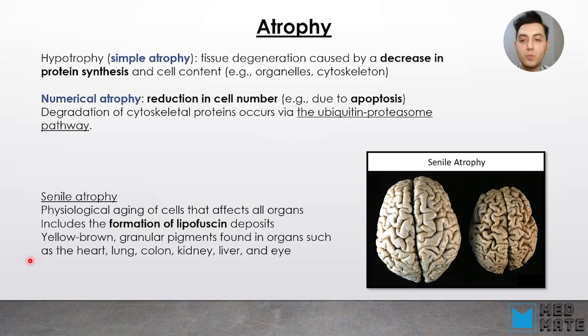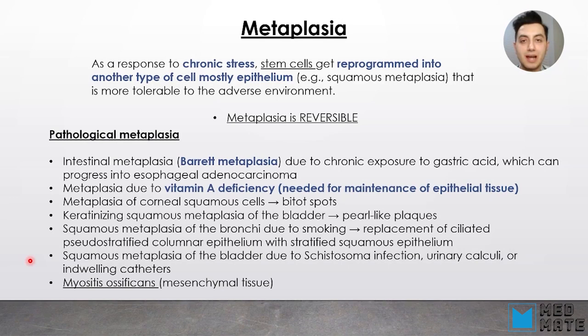An example of atrophy is senile atrophy, which is physiological aging of cells that affects all organs. It includes the formation of lipofuscin, a yellow-brown granular pigment found in organs such as heart, lung, kidneys, liver, and eye. This lipofuscin gets deposited in different tissues when there is senile atrophy.